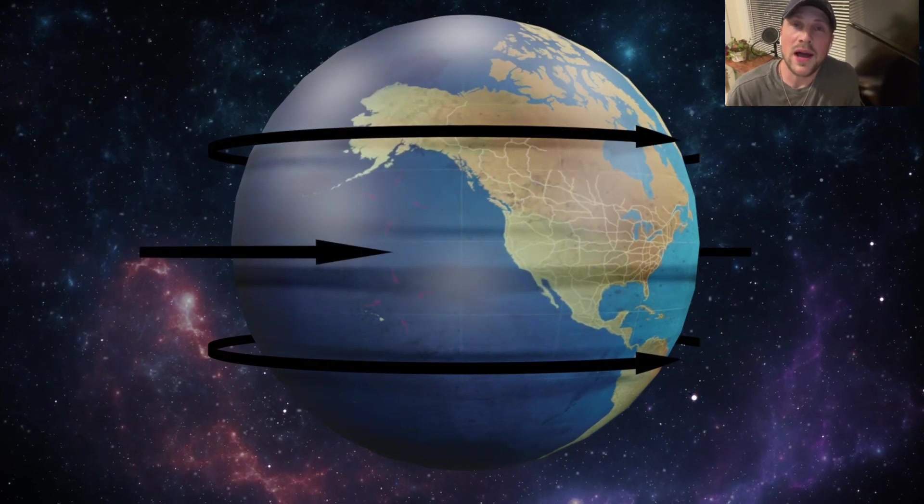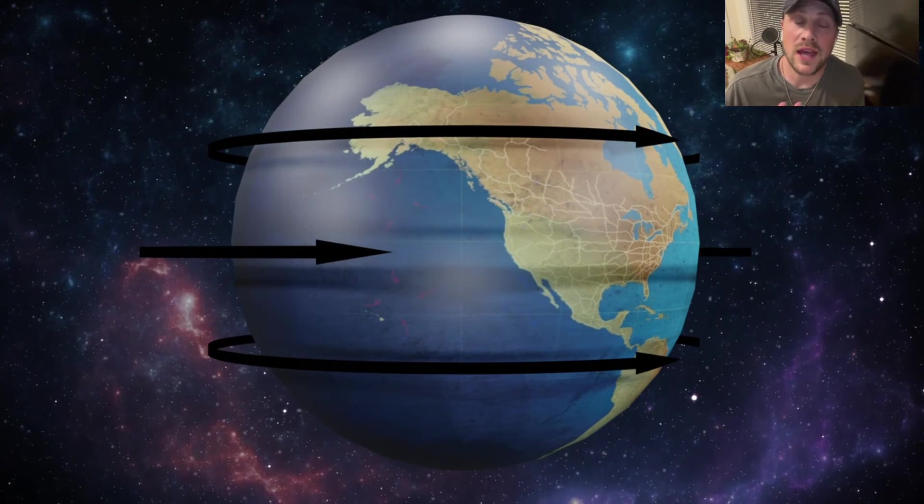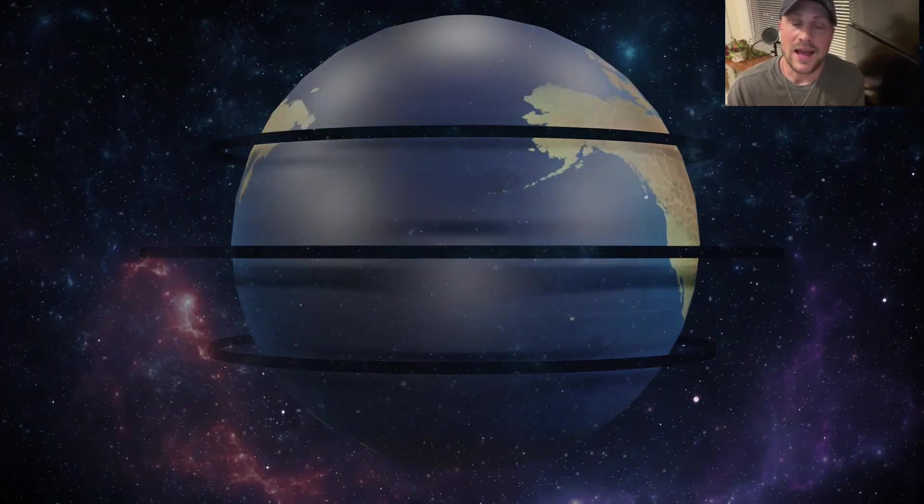So that explains why these pressure systems spin the way that they do in one hemisphere and then in the opposite direction in the other hemisphere. It's because of that rotational velocity of the earth changing and that Coriolis effect that we get from the earth's rotation. We also talked about in this video what weather those pressure systems bring, how they interact with the air around them, and why we care about that stuff as pilots.